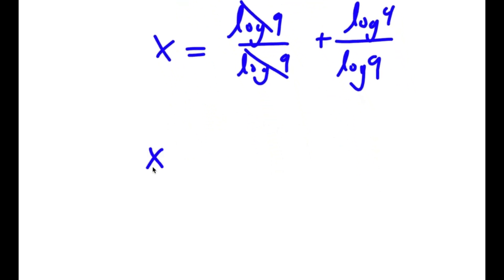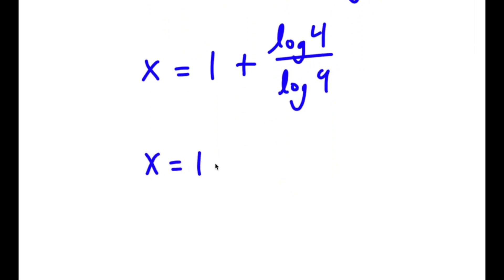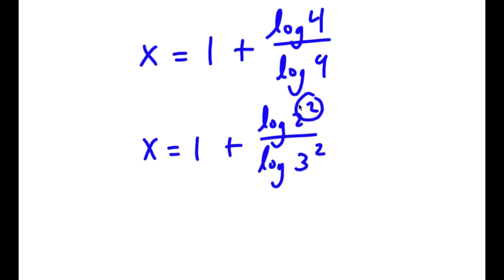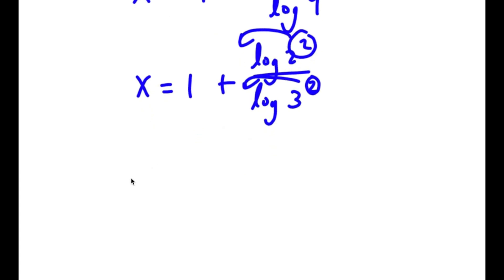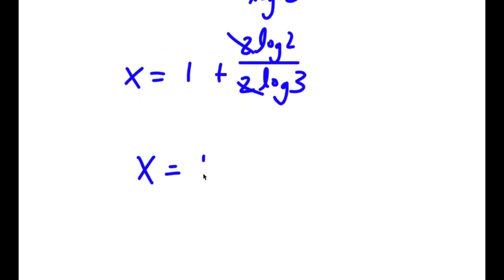Log 9 over log 9 — these two cancel out. So I have x is equal to 1 plus log 4 over log 9. Log 4 is the same thing as log of 2 squared, and log 9 is the same thing as log of 3 squared. So I can move the 2s to the front: x is equal to 1 plus 2 times log 2 over 2 times log 3. These two 2s cancel out, so x is equal to 1 plus log 2 over log 3.